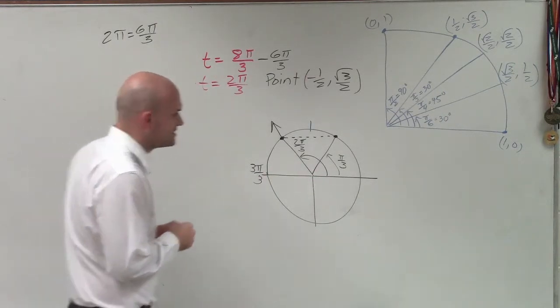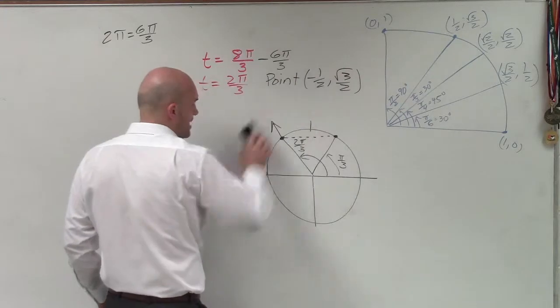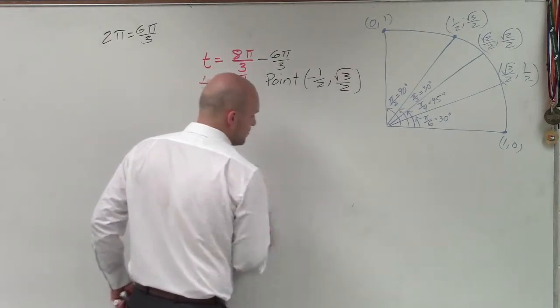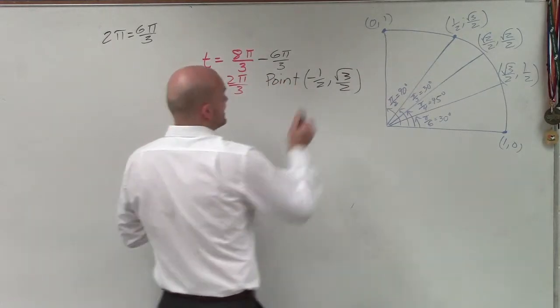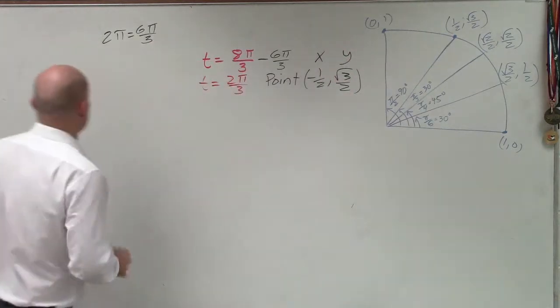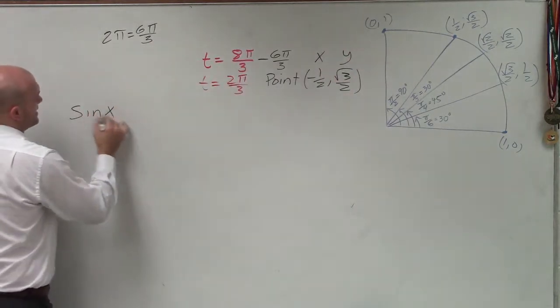So to determine the sine, cosine, and tangent of these points, now I have my point and I just need to determine what is the value of the sine, cosine, tangent. We know this coordinate point is x and y. So let's do the sine, cosine, and tangent.